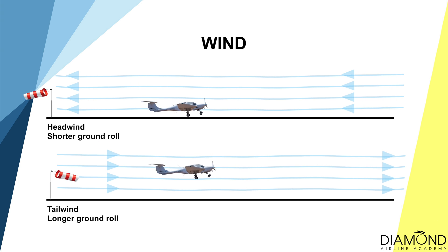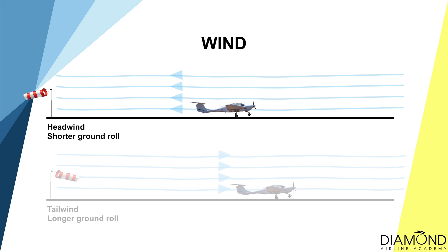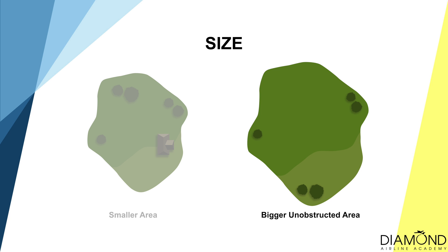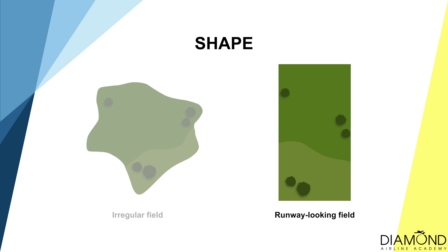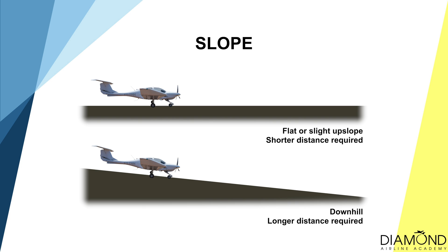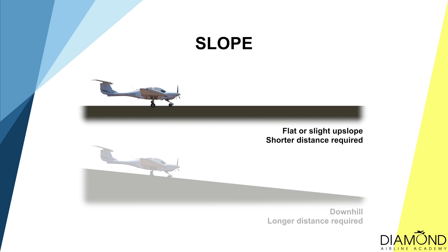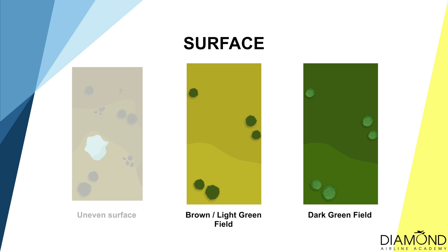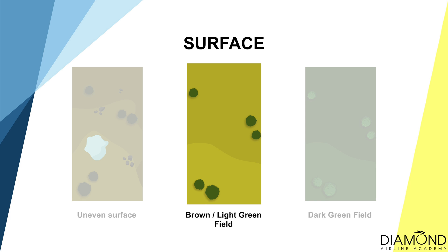Wind: try to land into wind as much as possible. Size: the bigger the field, the better chance for a safe landing. Shape: ideally, a rectangular runway-looking field. Slope: ideally flat or slightly uphill. Surface: flat surface would be ideal. If landing on a grass field, choose a lighter colour field as it normally indicates less moisture in the soil, which means a harder surface.